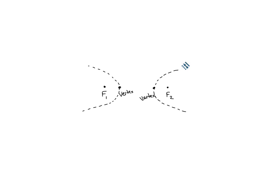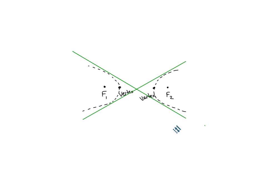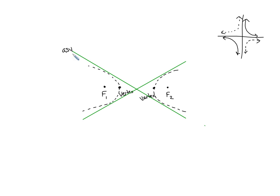What we do have on hyperbolas that we don't have on ellipses is asymptotes. We have two asymptotes that go diagonally. You learned about hyperbolas in the last chapter — things like y = 1/x, which looked like two branches with vertical and horizontal asymptotes. Now we're going to turn that picture on its side a little bit so they open either left and right or up and down, and the asymptotes are diagonal.